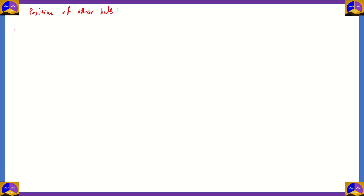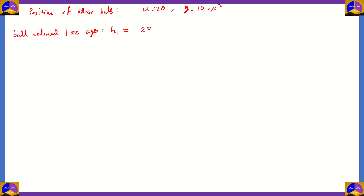We need to find the position of the other balls when one of them is being released. For the ball released 1 second ago, h1 equals 20 times 1 minus half times 10 times 1 squared, which is 20 minus 5, giving h1 equals 15 meters.